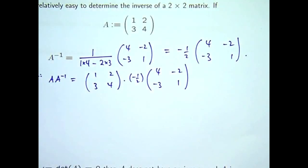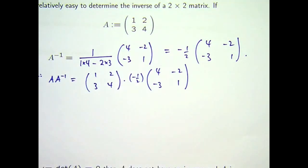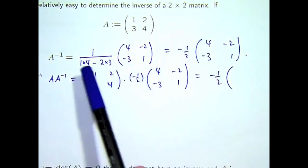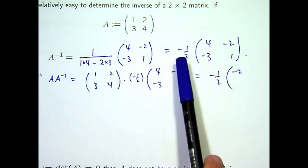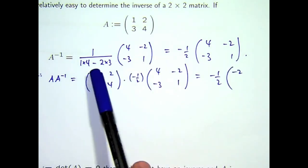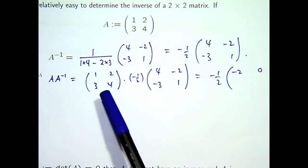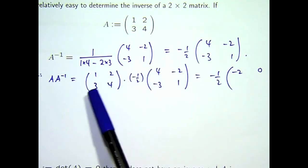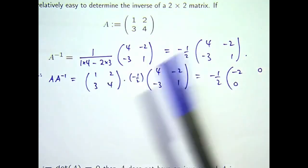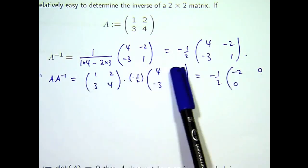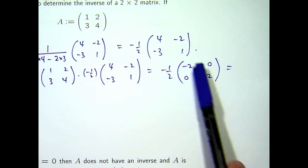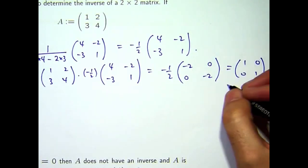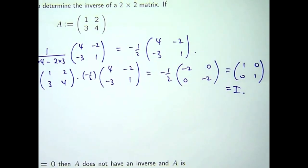So I can kind of keep that minus 1 half. I can just leave it there. And it'll be this row times this column. So 4 minus 6 minus 2. This row times this column will give us the next entry. So minus 2 plus 2, 0. This row times this column will give us this entry. So 12 minus 12. And this row times this column will give us that one. So minus 6 plus 4. So if I factor in this minus 1 half, I do get the identity matrix.